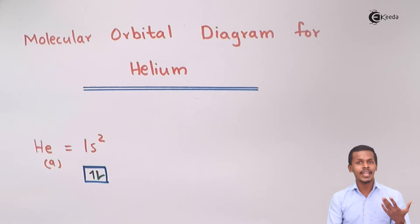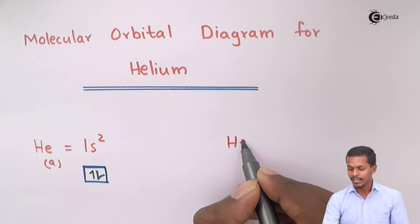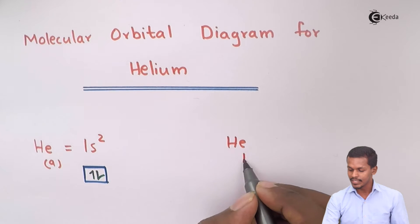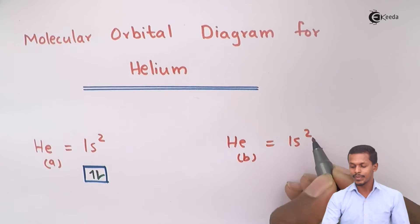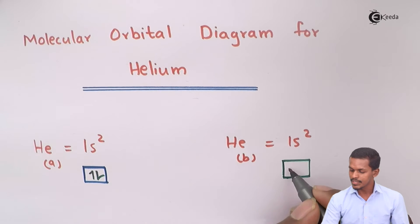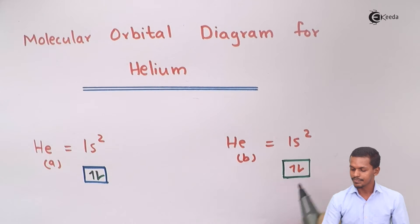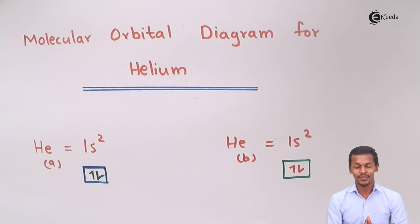This is the atomic orbital that we have for Helium A. Similarly, we can mention another helium which has an atomic orbital that can also be written as 1s², with an electronic configuration consisting of basically two electrons. So based on these two atomic orbitals for helium, let us now understand how we are going to construct the molecular orbital diagram.